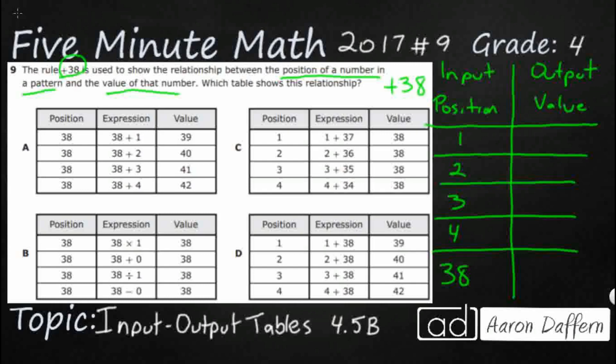If we think of this like an input-output machine, we are going to input our position 1, 2, 3, 4, or 38. When it goes into the machine, this rule is what happens to it. We're going to start with 1 and then plus 38. The answer is going to be our output. So, 1 plus 38, well, that's just going to be 39.